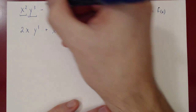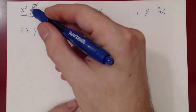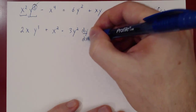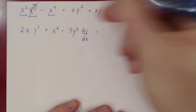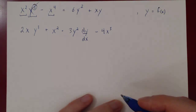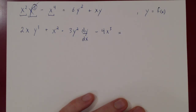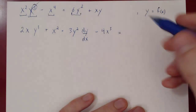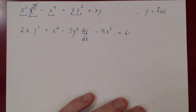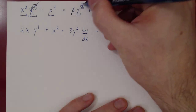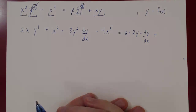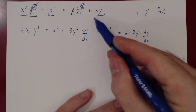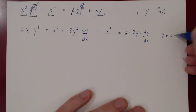Plus the first term x squared, times the derivative of y cubed with respect to x. By the chain rule, we get 3y squared times dy/dx. Then minus the derivative of x to the fourth, which is 4x cubed. That takes care of the left-hand side. For the right-hand side: the derivative of 6y squared with respect to x gives 6 times 2y times dy/dx, which is 12y dy/dx. Plus the derivative of xy by the product rule: derivative of x is 1 times y, which is y, plus x times dy/dx.